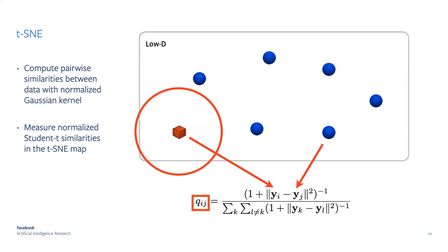The key change in the low-dimensional space is that instead of a Gaussian kernel we use a Student-t kernel. The t-distribution looks similar to a Gaussian but has much heavier tails. It turns out that using this heavy-tailed distribution leads to much better results in practice.